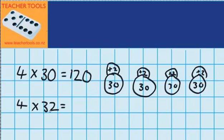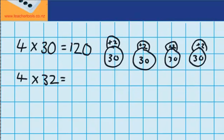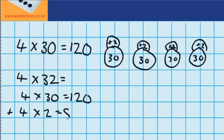So four groups of 32 is the same as four groups of 30, which we already know is 120. So that's these groups here, 30, 60, 90, 120, plus four groups of two, which is eight. And I've got those bits up here, two, four, six, eight. So now I just need to add those two amounts together. 120 plus eight is 128. So four times 32 must be 128.